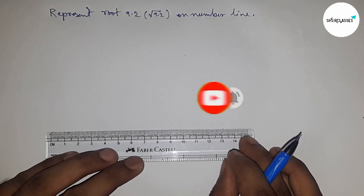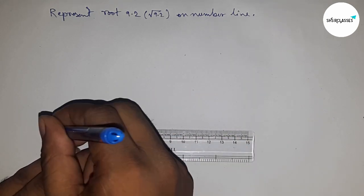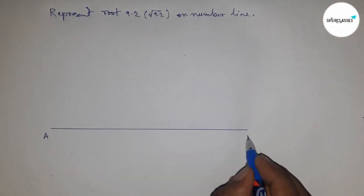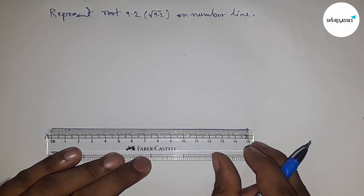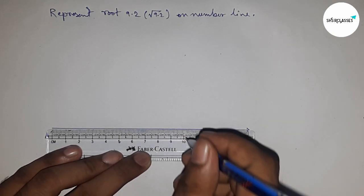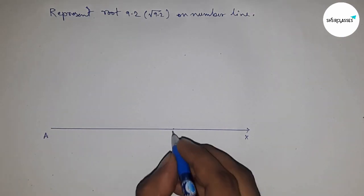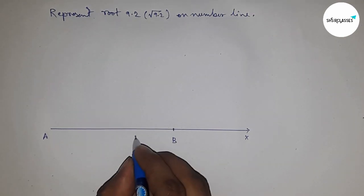First of all, draw a line of any length, this is the AX line. Next, take 9.2 centimeters by scale, so this is 9.2 centimeters. This is point B, so AB is 9.2 centimeters.